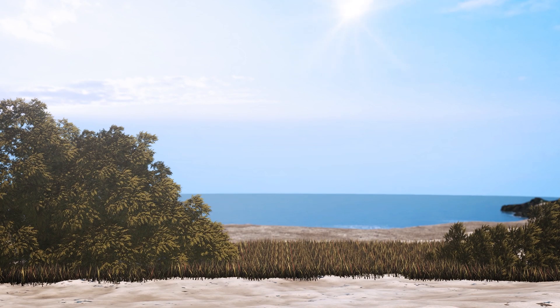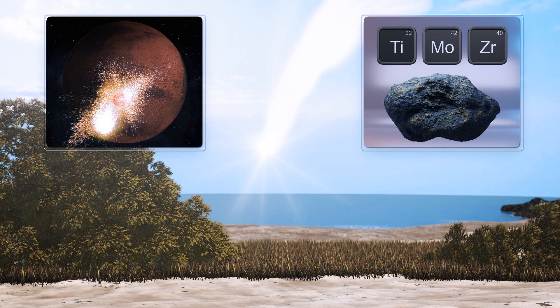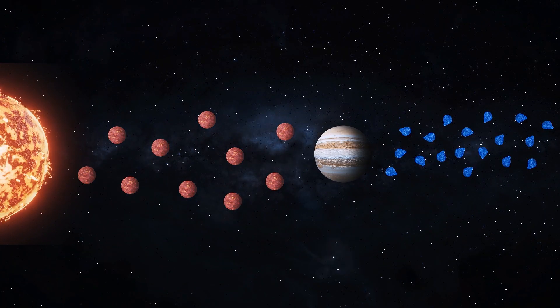Scientists analyzed material from 17 meteorites originating from Mars and subsequently compared levels of titanium, zirconium, and molybdenum isotopes from Mars and Earth with those of different groups of meteorites from the inner and outer solar system to reach their conclusion.